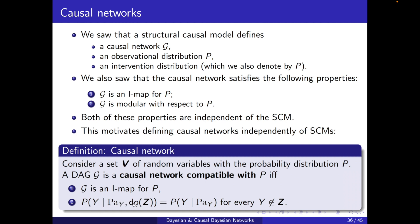The modularity condition states that P of Y conditioned on its parents, when we intervene on Z, is the same as P of Y conditioned on its parents — for all interventions except when intervening on Y itself. So anything other than the intervention point, this property should hold. If a graph satisfies these properties with respect to P, then it is compatible with P and it is a causal network.